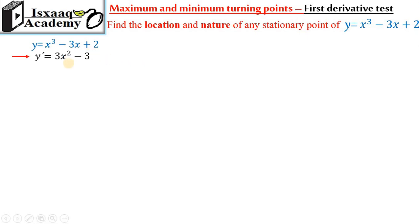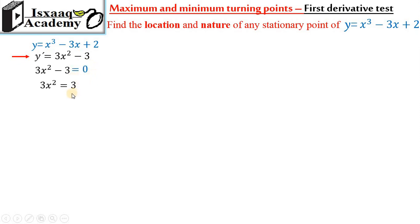The derivative of this function is x cubed. We have 3x squared. So if we set the slope equal to zero, 3x squared minus 3 is equal to zero. If we solve this, we get x squared equals 1, so x is positive 1 and negative 1.